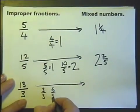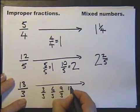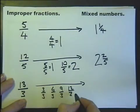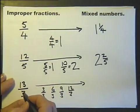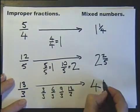Now 3 over 3 is 1 whole 1. 6 over 3 is 2. 9 over 3 is 3. 12 over 3 is 4. So 13 over 3 is actually 4 whole numbers and one more third.